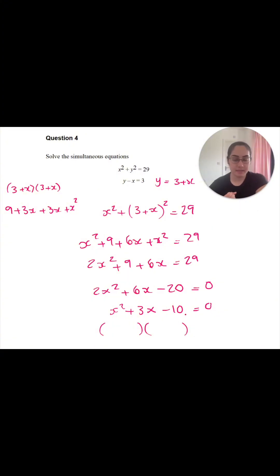So I'm looking for two numbers that multiply to give me minus 10, add or subtract to give me 3. And I'm going to go with 2 and 5. So if I place an x here and an x here, I'm going to do minus 5 and plus 2.